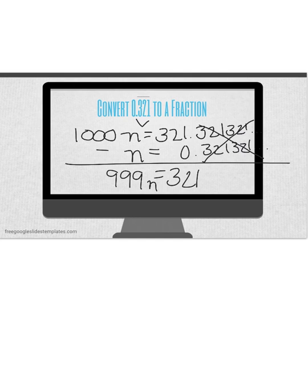Now I'm almost there. I have to isolate my variable. To isolate it, I have to remove that multiply by 999. The only way to do that is to divide. Let me change my color. I'm going to divide by 999 both sides.